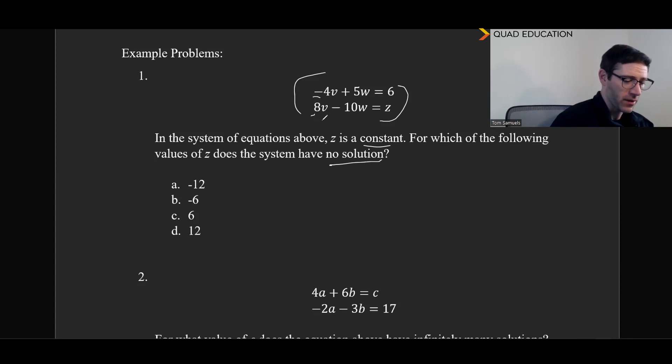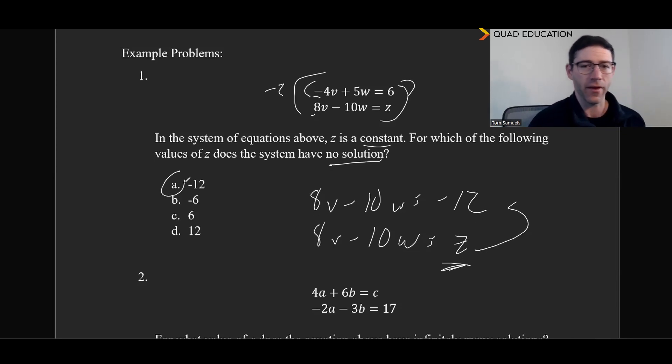So I think probably the best thing we can do is multiply this guy right here by negative two. And so negative two times negative 4v is 8v. And that's going to be minus 10w equals negative 12. And then here we have 8v minus 10w equals z. And just like the question that we just did, we know that z cannot be negative 12. And so that's our answer for that one.